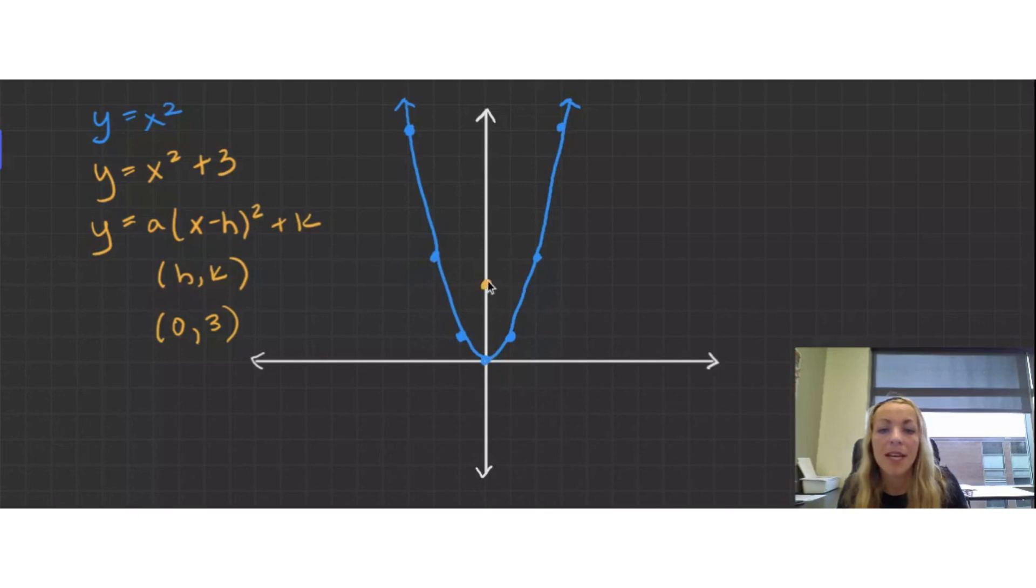Now I'm going to treat this as if it's (0, 0). And I normally go over 1 and square that. So 1 squared is 1. 2 squared is 4. And let's just follow that symmetry. And draw a smooth curve. So this is a vertical shift.